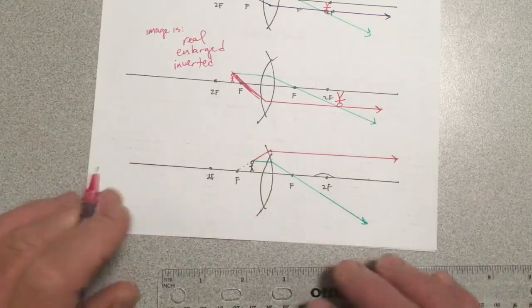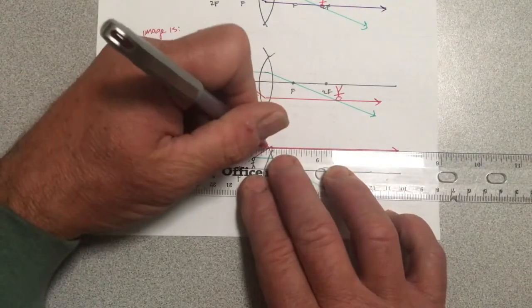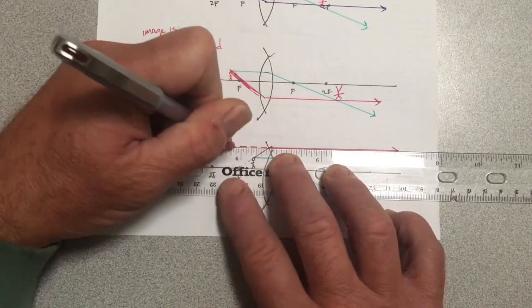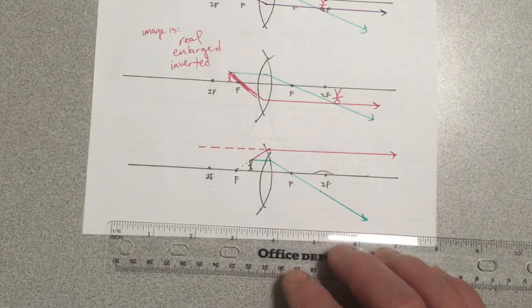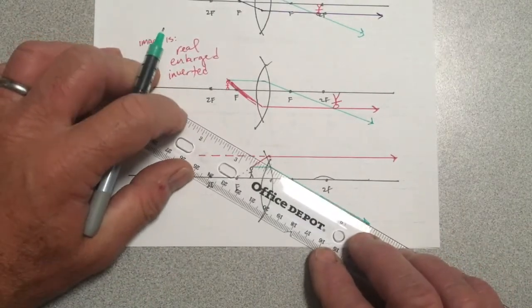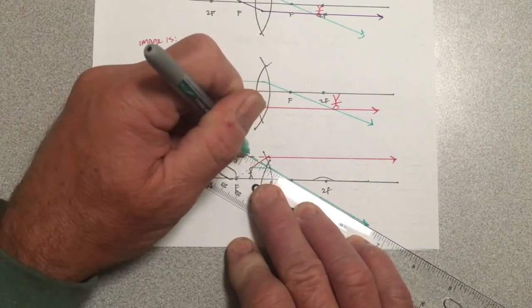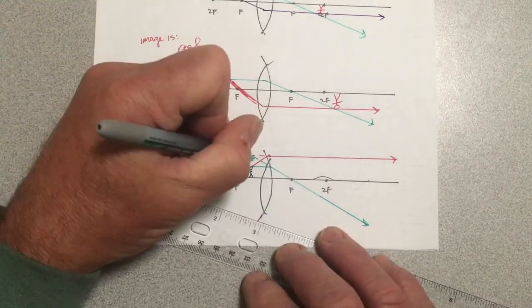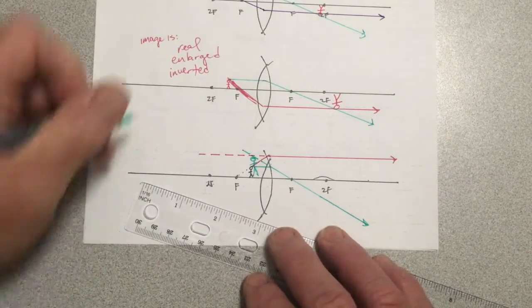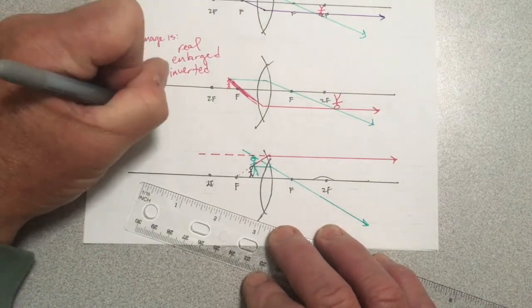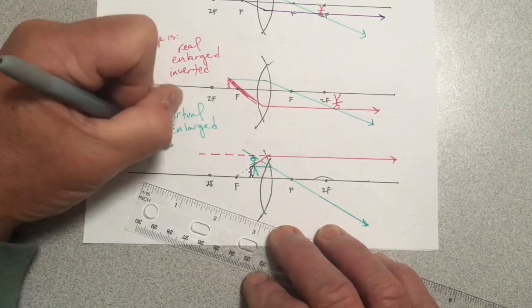Again, these rays are divergent. They do not come together. So our brain makes sense of this situation by, again, assuming that light travels in straight lines. And somewhere back in time, so to speak, these two rays were in the same place. And that location is where the image is formed, believe it or not. Because we had to go backward with dotted lines, this image is not real. It is enlarged and it is erect or upright.